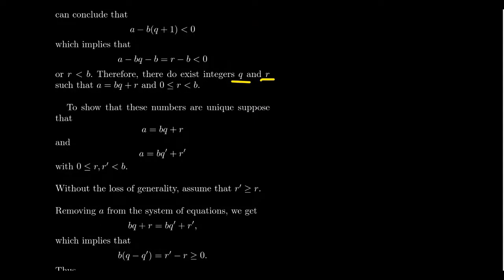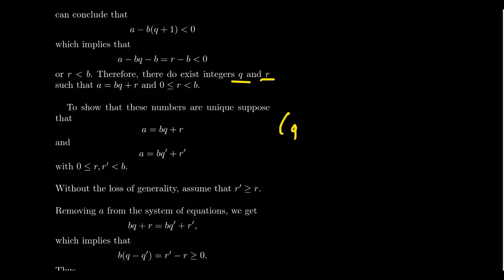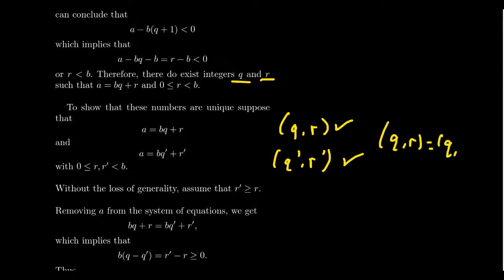We've now demonstrated that given any integer A and any positive integer B, there exists a quotient and a remainder such that A equals BQ plus R, and R sits between 0 and B — where it could be 0 but can't equal B. That gives us the first part of our division algorithm. The next part is to show that these values are unique. To show a unique element, we suppose we have two pairs satisfying the conditions and argue they're equal. So suppose A equals BQ plus R and also A equals BQ prime plus R prime, where Q, R, Q prime, R prime are integers and R and R prime both satisfy 0 ≤ R, R prime < B.